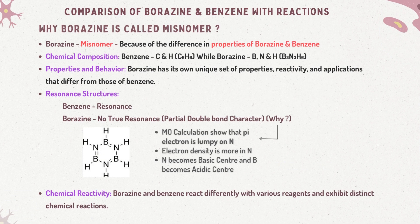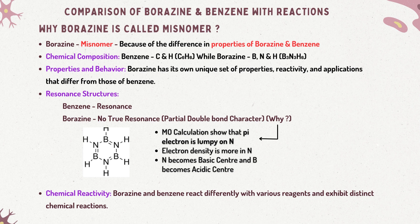While we have discussed certain similarities between benzene and borazine, it's important to note that distinct properties set these two compounds apart. Borazine is sometimes termed a misnomer due to the differing properties of borazine and benzene. Unlike benzene, where true resonance occurs due to the delocalization of pi electrons, borazine does not exhibit true resonance. Molecular orbital (MO) calculations reveal that pi electrons tend to be concentrated around nitrogen due to its higher electronegativity compared to boron. As a result, nitrogen in borazine gains basic characteristics, while boron gains acidic characteristics, leading to distinct electronic distributions in the two compounds.